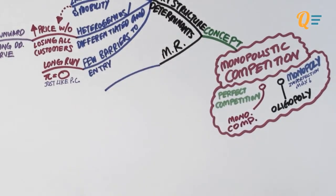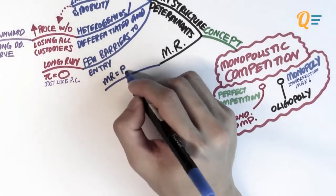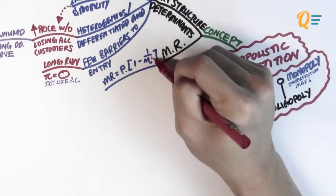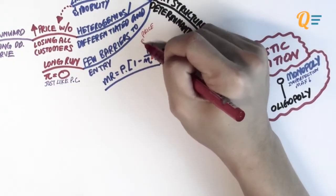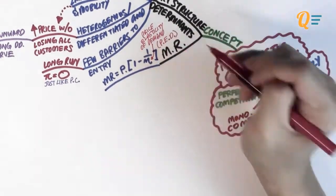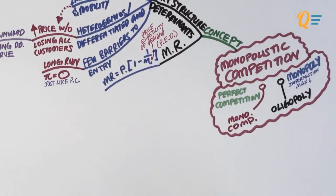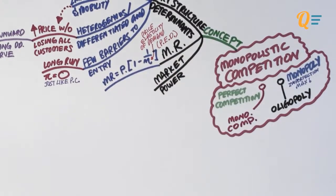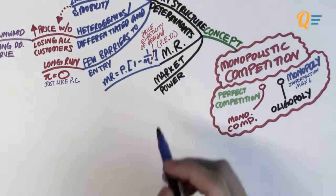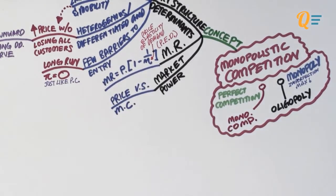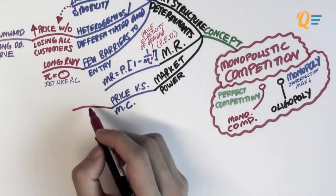Now let's talk about marginal revenue. The marginal revenue can be calculated with this formula: P multiplied by bracket 1 minus 1 over the price elasticity of demand — let's call that PED. You need to understand this formula because we're going to talk about market power. To see whether a firm has market power, we compare the price it charges and the marginal cost it incurs for producing a certain amount of that good.